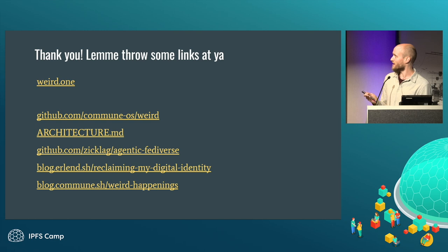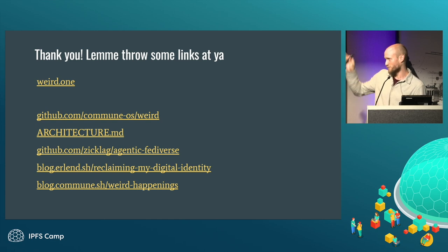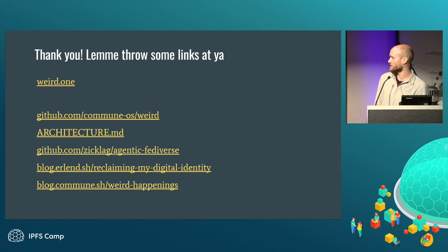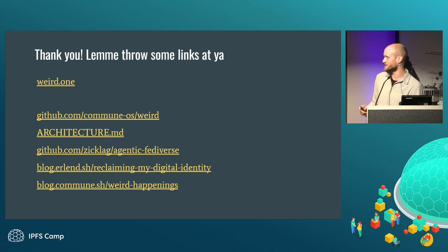Thank you very much. If you want to know more about what we're working on, weird.one is our live site — we've got a really cool web redesign on the way in the next few days so it's going to look very different real soon. For the rest of the links, just come and ask me. In short, we are on GitHub as an open project and have a neat architecture document explaining how we're using Iroh. We've also got a document we're drafting called the Agentic Fediverse, which will soon live on WEIRD itself as a communal garden document. And for the start of this journey, you can read my blog post 'Reclaiming My Digital Identity,' or if you want to read it in reverse, read 'Weird Happenings.'